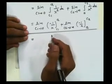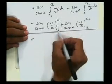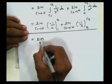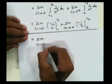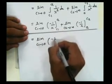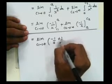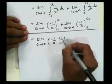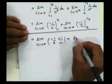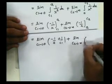Putting the upper and lower limits, we have: limit c1 tends to 0 of minus 1 by a plus 1 by c1, plus limit c2 tends to infinity.